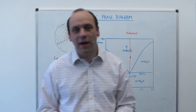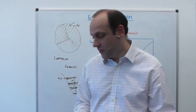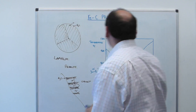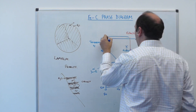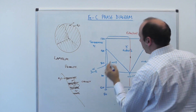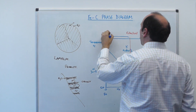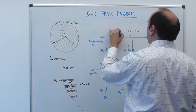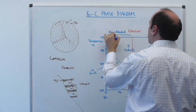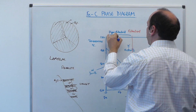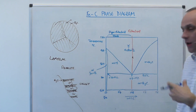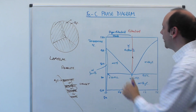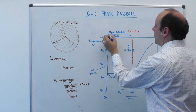Moving on from there, we have another situation: so-called hypo-eutectoid steels. Steels in the region from 0 up to 0.8 weight percent carbon are called hypo-eutectoid steels — they are to the left, at the lower carbon content. Hypo means lower or not very much. They undergo a different transformation.